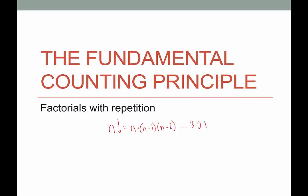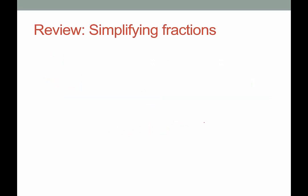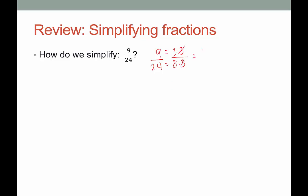We're going to look at some applications where we deal with a little bit of repetition. Before we get into that, I just want to review simplifying fractions. So how would we simplify 9 over 24? We're going to do this the more arithmetic way. What we're going to say is that 9 is the same as 3 times 3, and 24 is the same as 8 times 3. So 9 over 24 is equivalent to 3 times 3 over 8 times 3, and we end up with 3 over 8. Just a little bit longer than what we normally do, but helpful in a second.